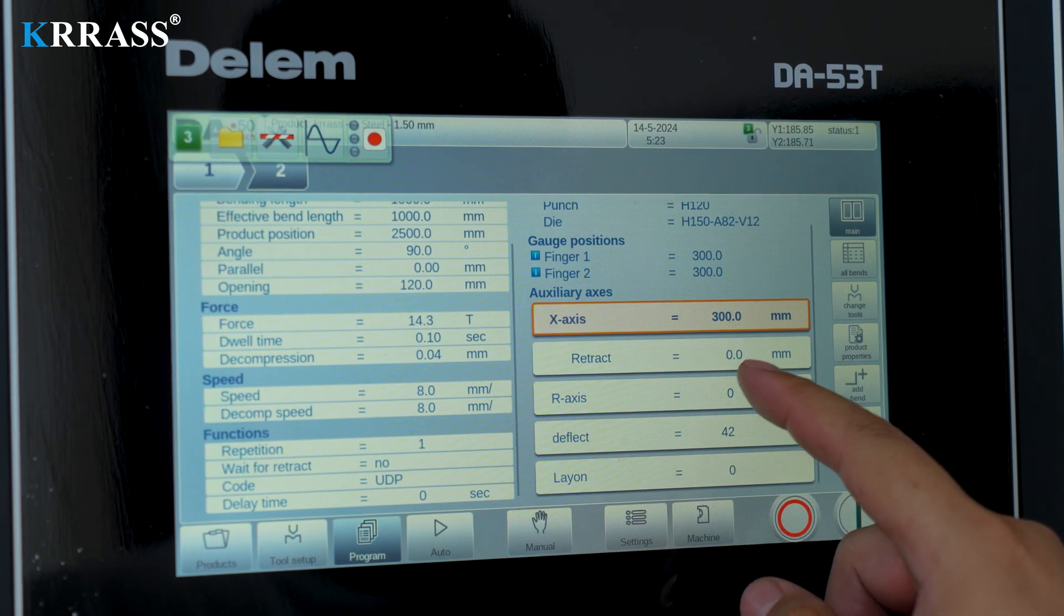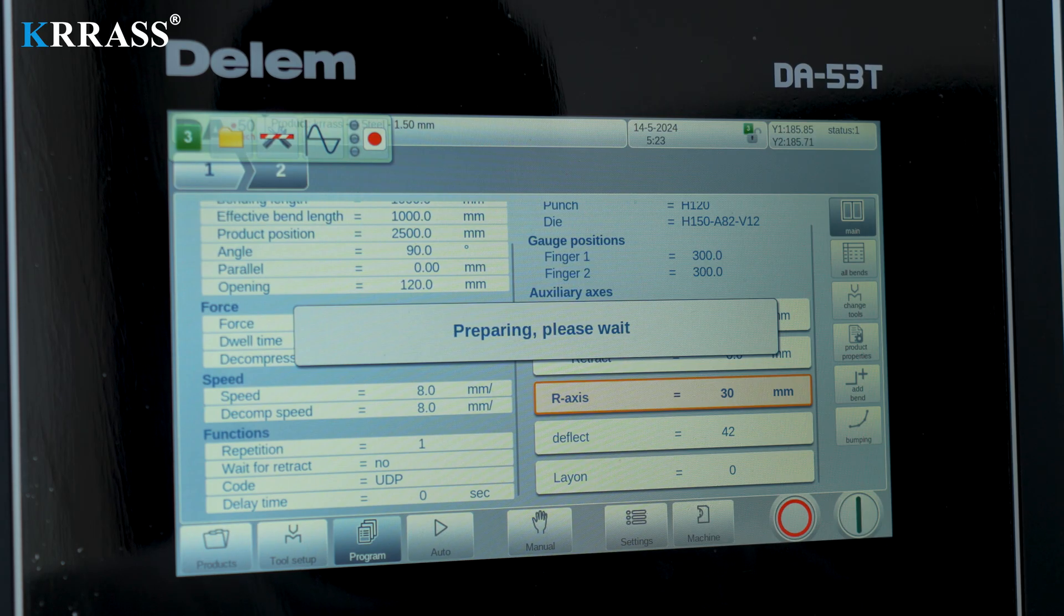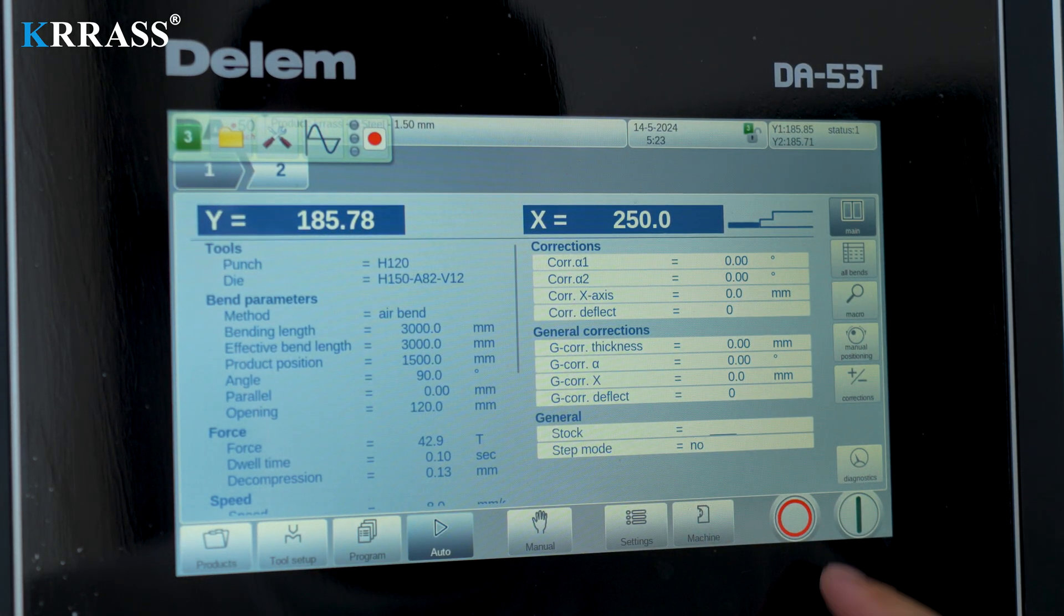The bending operation process is simple and fast. We only need to follow the set bending procedure. In addition, the entire bending machine has a solid body structure.